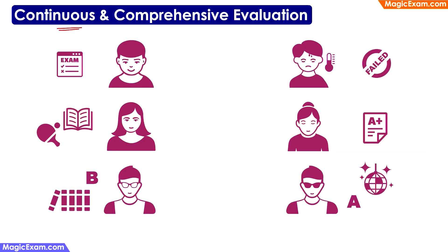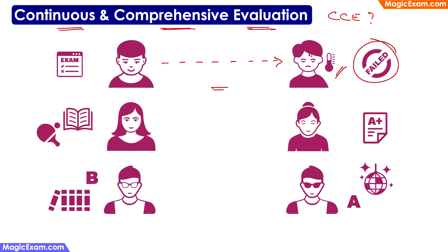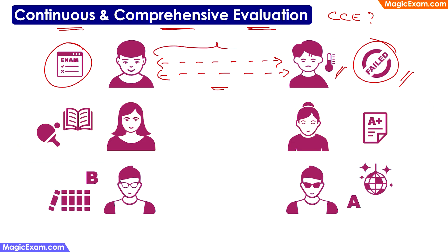The next concept is continuous and comprehensive evaluation. Let us look at some examples to understand CCE better. Ram and Shyam were two friends who both put effort into their studies throughout the year. But just before the exam, Shyam got fever and could not sit in the final exam, so he failed. Whereas Ram sat in the final exam and passed. If we depend only on the annual exam, Shyam has failed. But if assessment was done throughout the year, both of them would have passed. This is where continuous and comprehensive evaluation throughout the year would have helped.